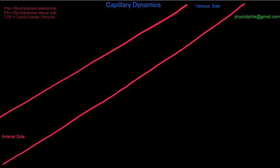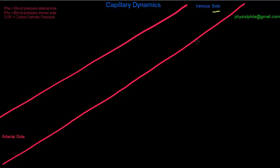Let's look at capillary dynamics today. What we have in the middle of the screen is a capillary. We have the venous end of the capillary — the end connected to the vein and the drainage of the capillary network — and we have the part of the capillary that's connected to the arterial side of the capillary network.